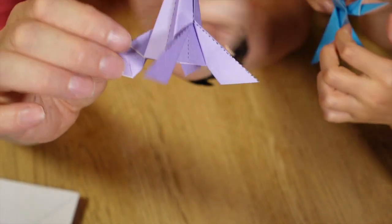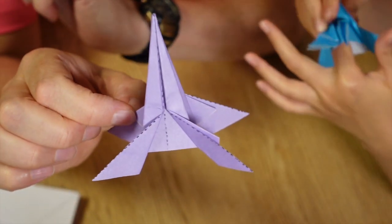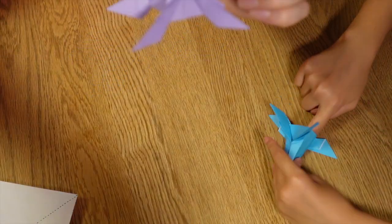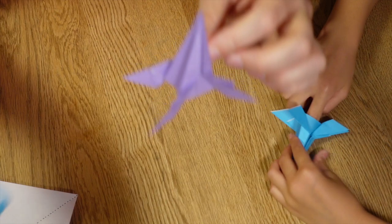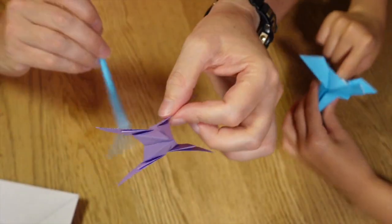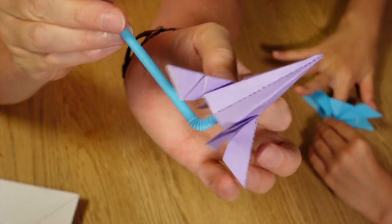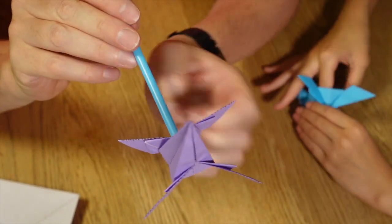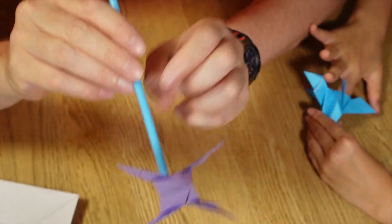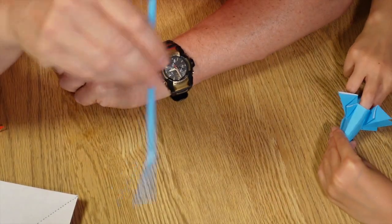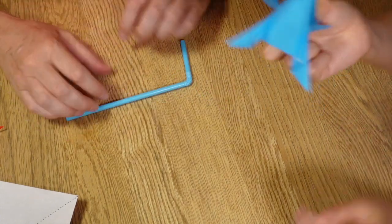And next, we get our straw and we place it in the center. And then you blow through here. And that's how you make a rocket.